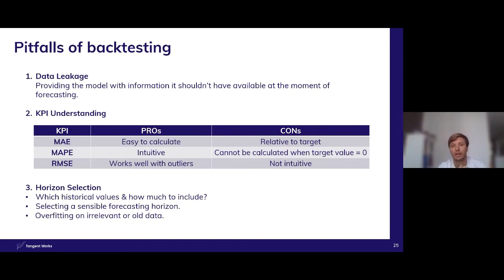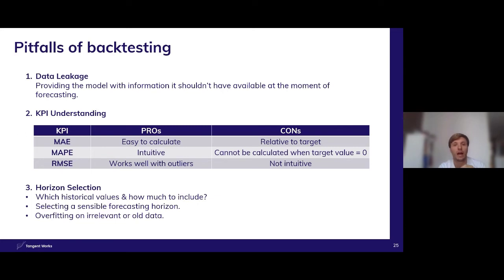The root mean square error (RMSE) works well with outliers and is very often used in the data science community, making it easy to compare models against one another. However, a big con is that it's not very intuitive — you cannot say whether an RMSE of 5000 or 200 is good without knowing the use case. So keep those things in mind while using different KPIs. The best way is to visualize them and see if you can get interesting visuals by comparing your actuals and your predictions.